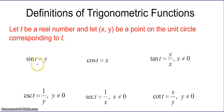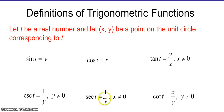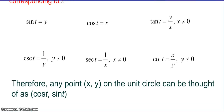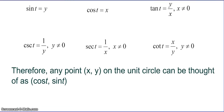Cosecant of t is the reciprocal of sine of t, so it's 1 over y — if y is 0, then cosecant is undefined. Secant of t is 1 over x, the reciprocal of cosine, and if x is 0 then secant is undefined. Cotangent, the reciprocal of tangent, is x over y — y cannot equal 0, otherwise cotangent is undefined. This leads to the realization that any point (x, y) on the unit circle can be thought of as (cosine of t, sine of t).